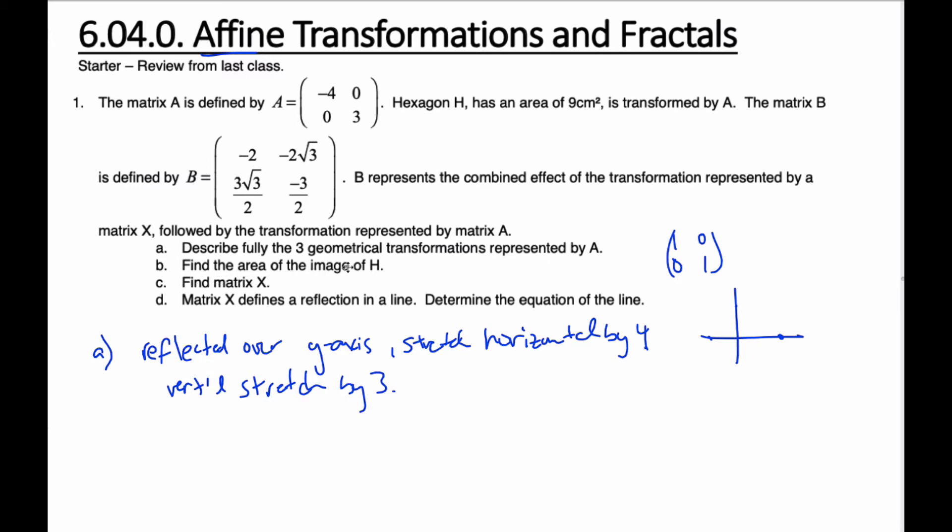Now, let's find the area of the image of H. So I have some hexagon somewhere, six sides, with an area of 9. Lovely hexagon, I know. And so, if you remember from the other day, if I take the determinant of A, take the absolute value of it, and multiply it times the area, you will get the new area of the image.